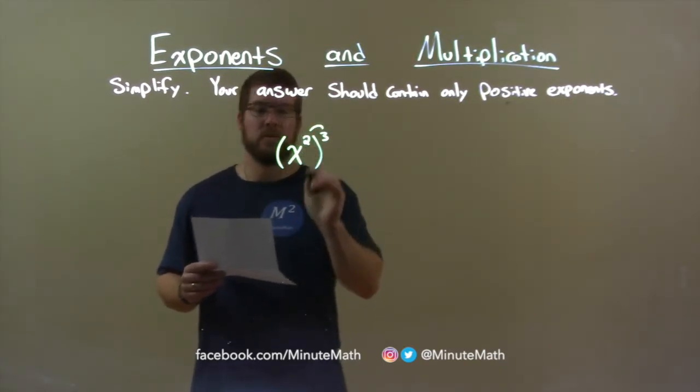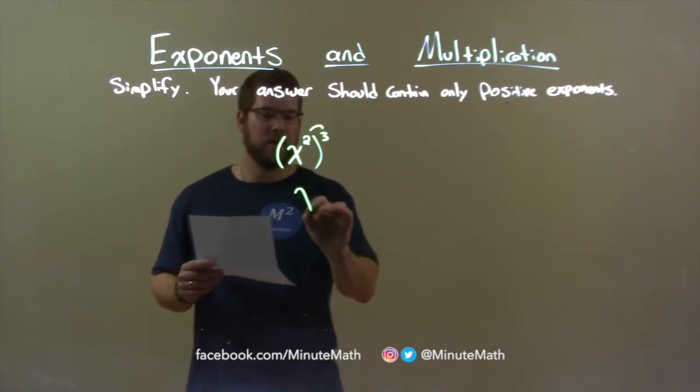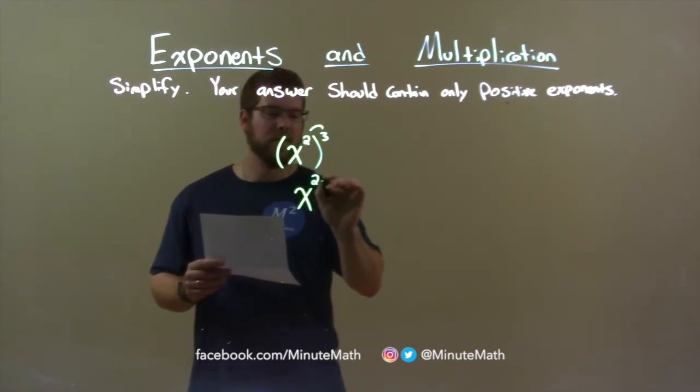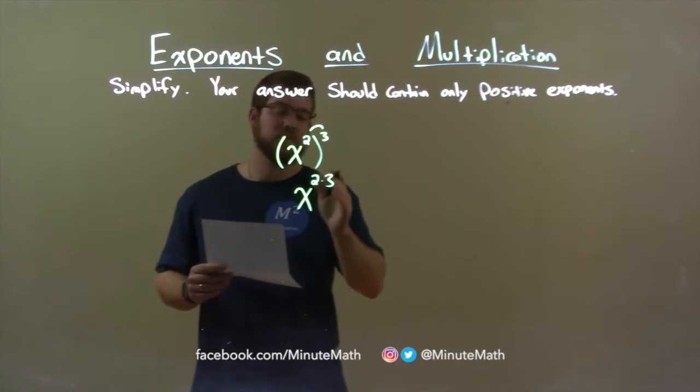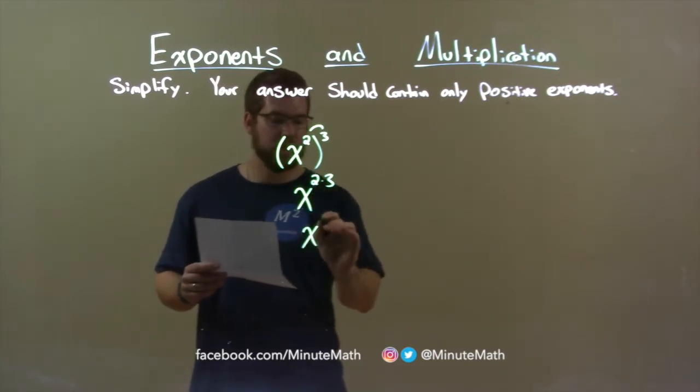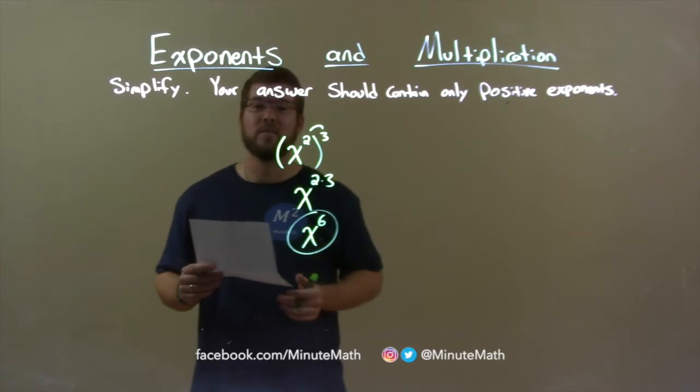So, x squared all to the third power is the same thing as x to the 2 times 3 power. Now, 2 times 3 is 6, so my final answer is just x to the sixth power.